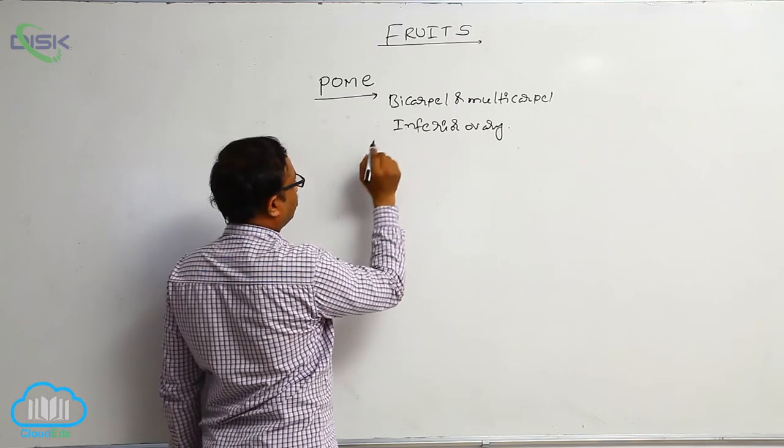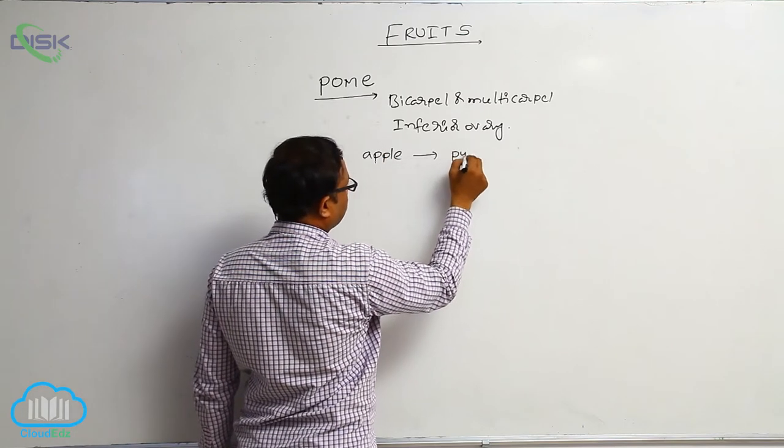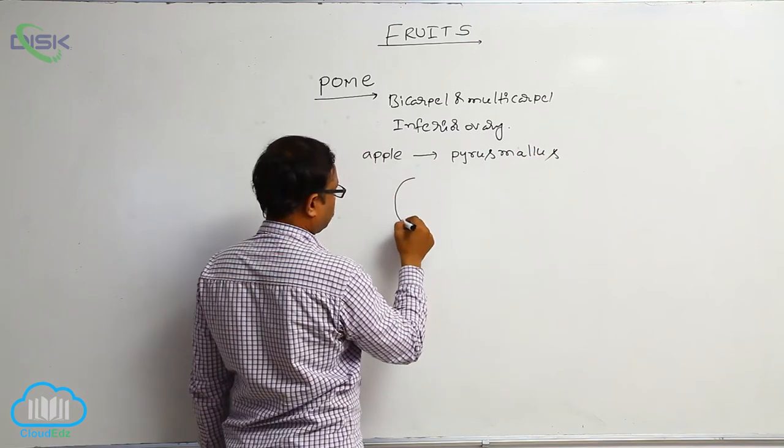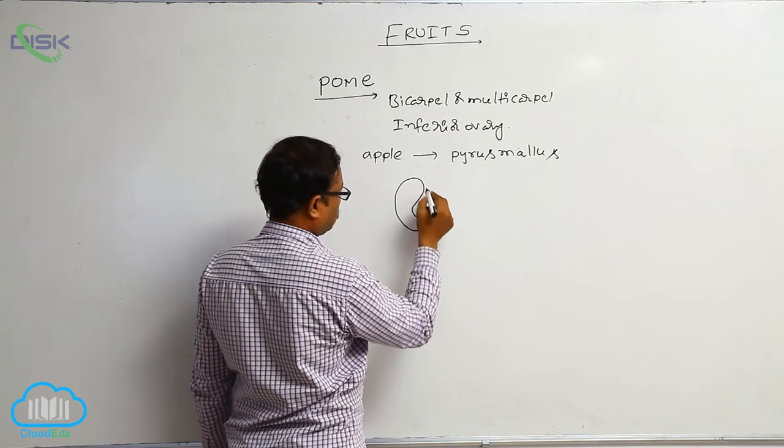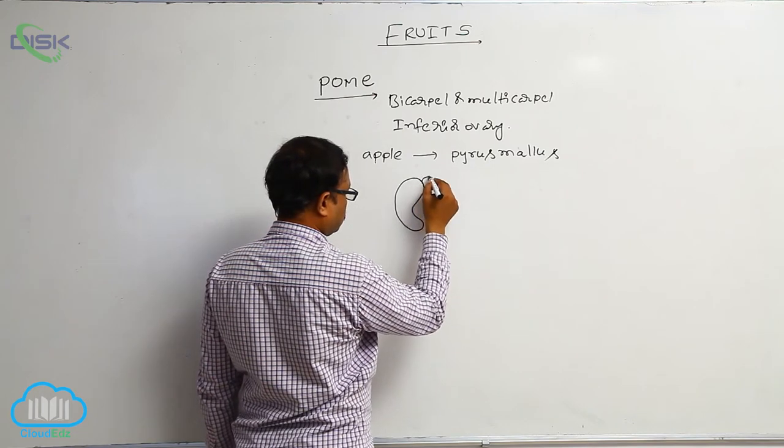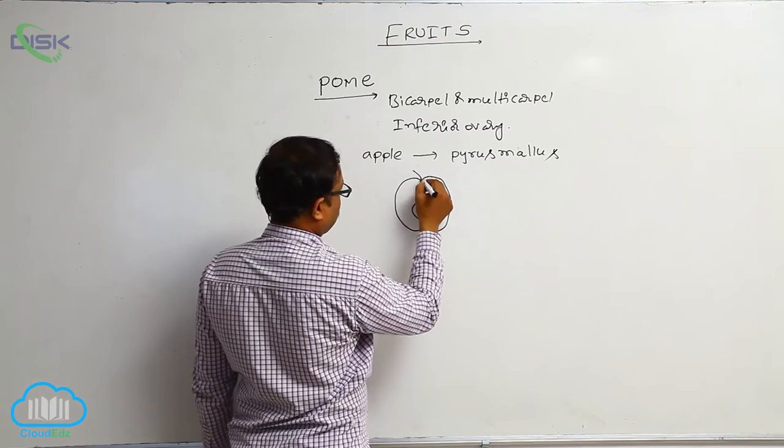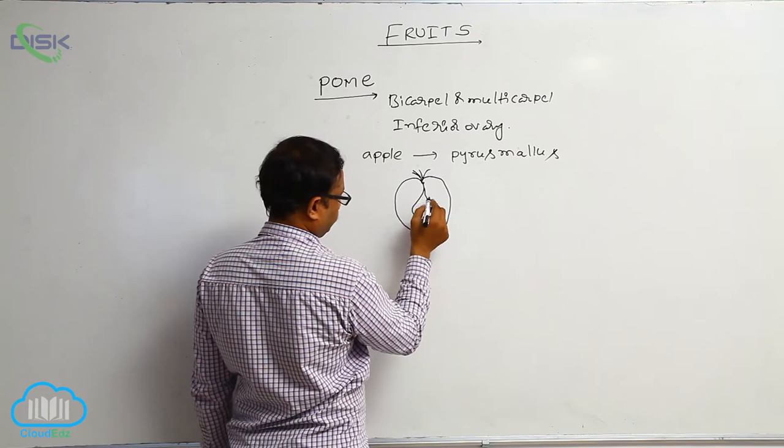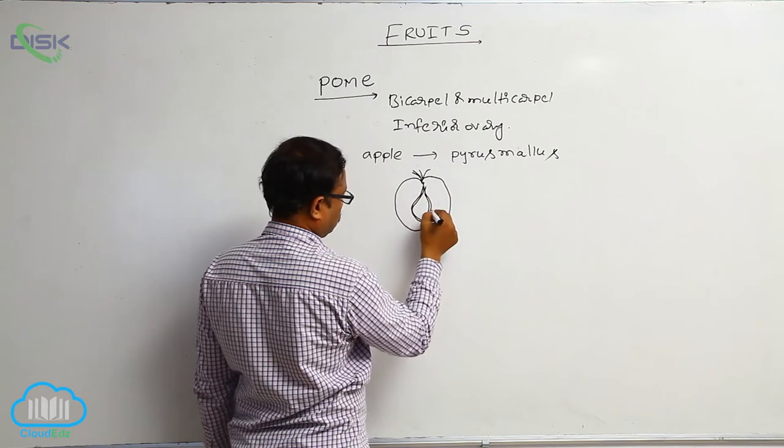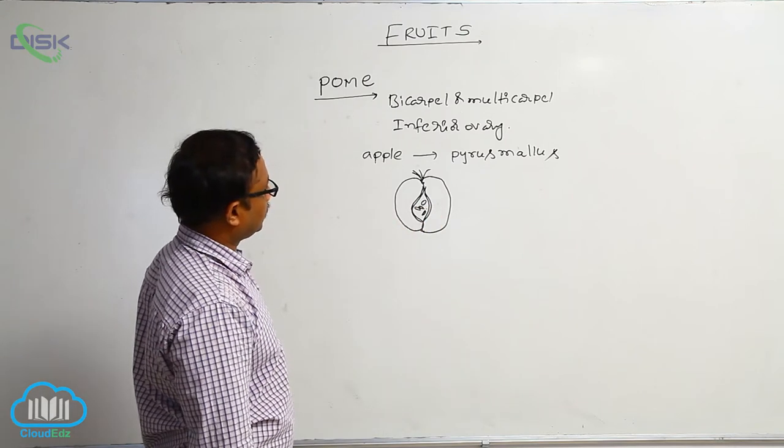Generally, I also explained before that pome example is apple. Apple, the scientific name is known as Pyrus Malus.